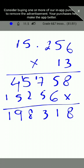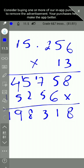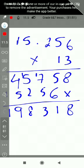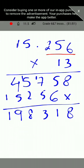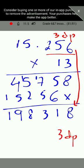Now we place the decimal point in the answer. In 15.256, we can see there are three decimal places — three digits after the decimal point: 2, 5, and 6. So we write three decimal places in the answer as well. Count three digits from the right: one, two, three, and place the decimal there. The answer is 198.318.